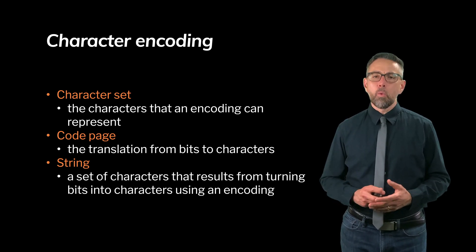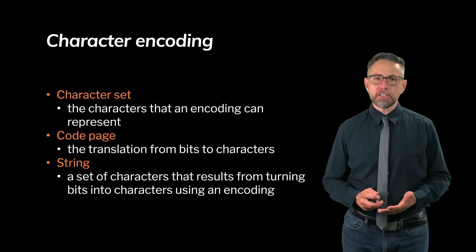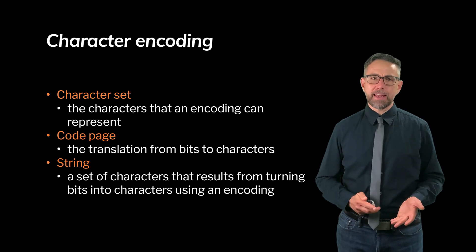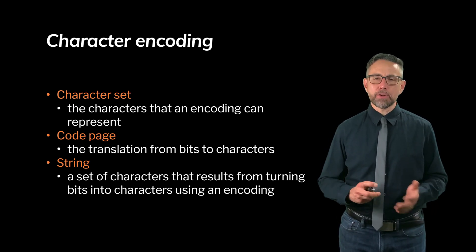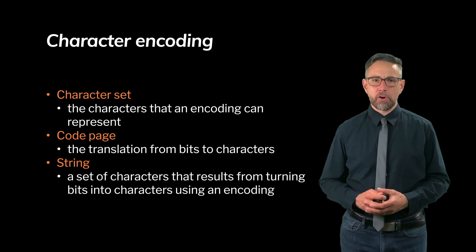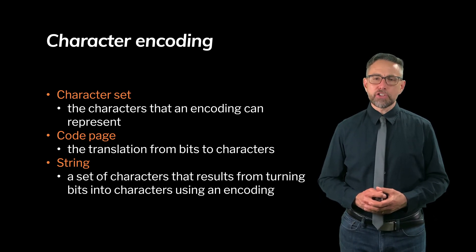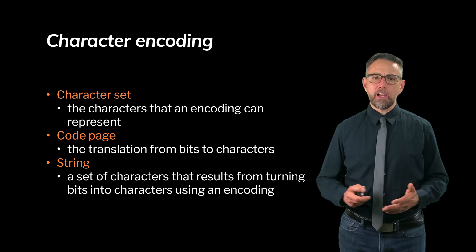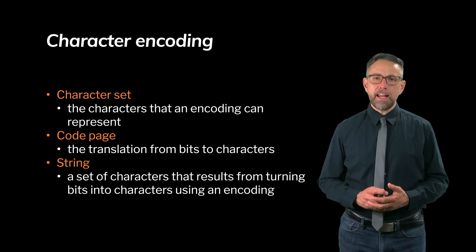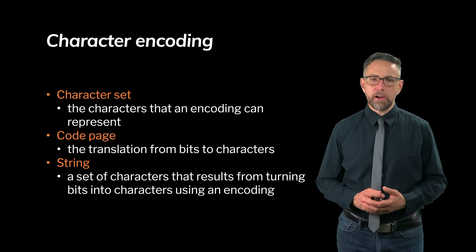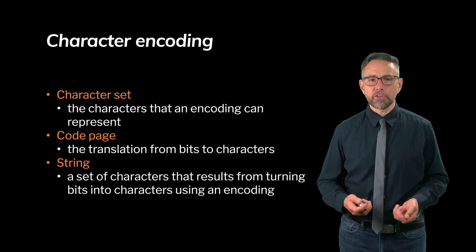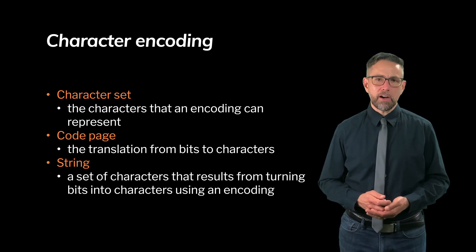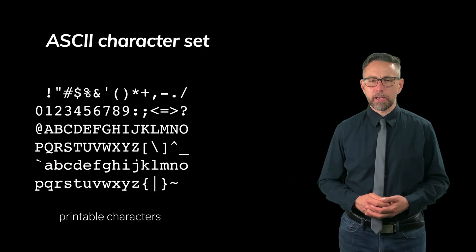Second is a code page, which tells us how to translate bits into a particular character — it's the translation guide, the Rosetta Stone. Third is a string, which is just a sequence of characters encoded in a particular character encoding. It is the set of characters that results from turning bits into characters using a particular encoding.